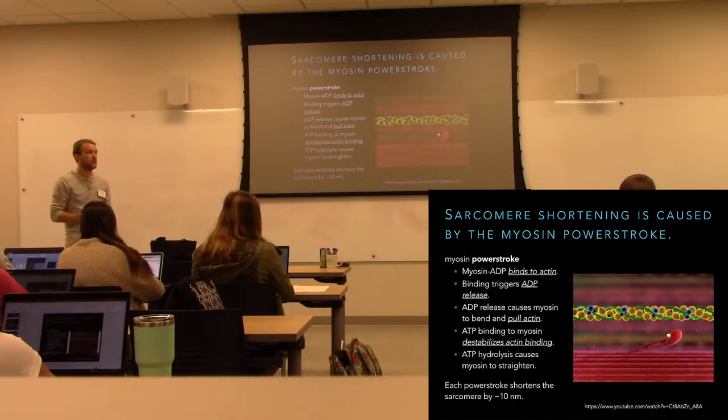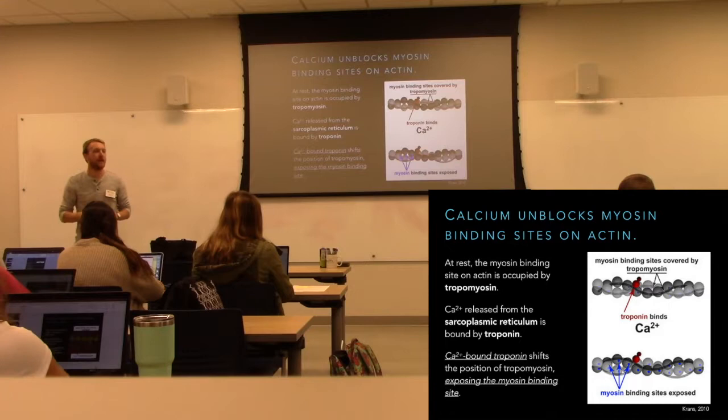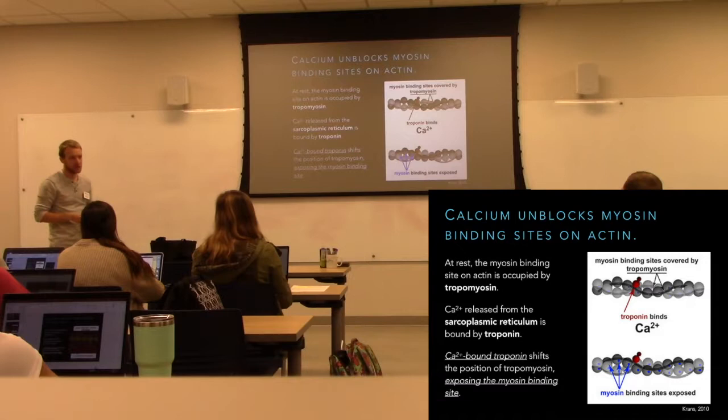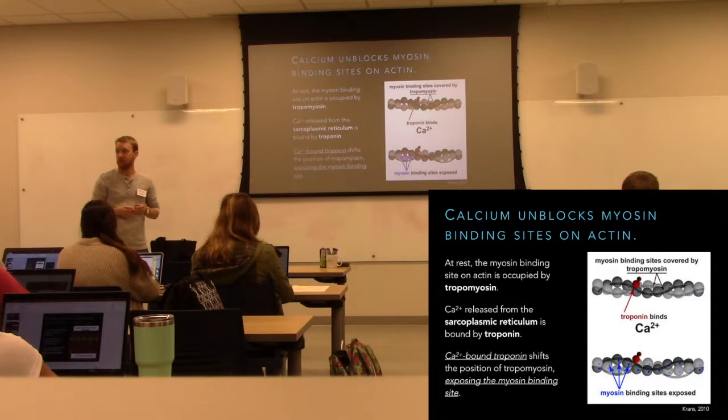Notice we haven't needed a neuron at any point yet — but of course we do. It's not just actin and myosin; there are other proteins involved. Those myosin binding sites on actin are normally hidden, which prevents myosin and actin from interacting and causing muscles to contract unless we tell them to. We tell them to by giving them a little burst of calcium.